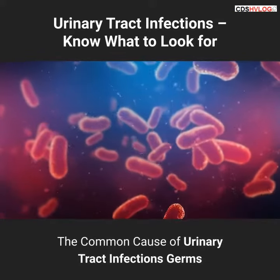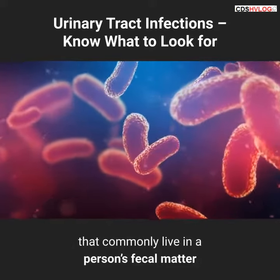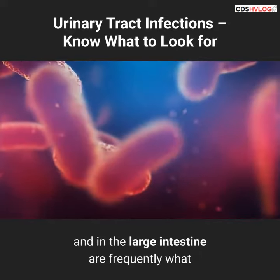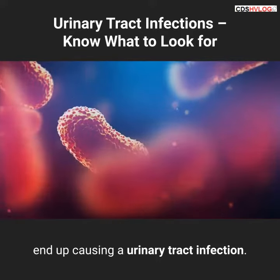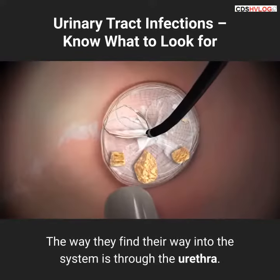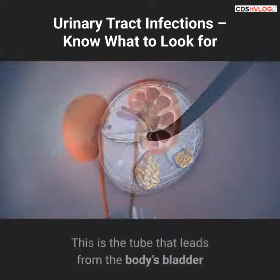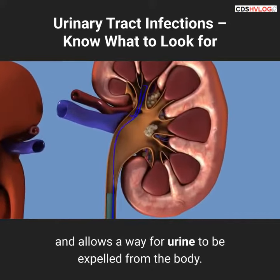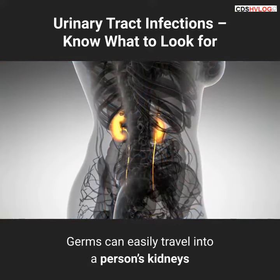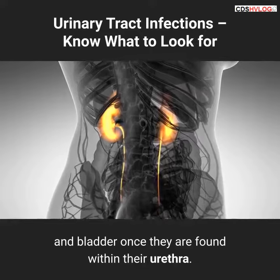The common cause of urinary tract infections: germs that commonly live in a person's fecal matter and in the large intestine are frequently what end up causing a urinary tract infection. They find their way into the system through the urethra — the tube that leads from the bladder and allows urine to be expelled from the body. Germs can easily travel into a person's kidneys and bladder once they are found within the urethra.